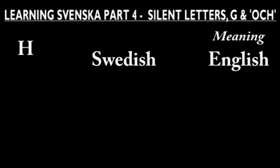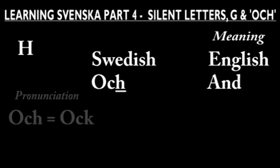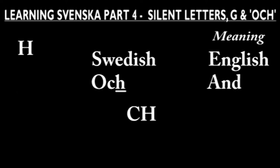Since we're talking exceptions, there's a very important exception for H. The Swedish word 'och', meaning 'and', has an H even though it's pronounced 'ok'. As you know by now, Swedish doesn't use double K. Instead we use 'ck'. For some reason, one of the most common words is a super weird exception where the K in 'ck' is replaced with an H. So keep that in mind — it's pronounced 'ok'.